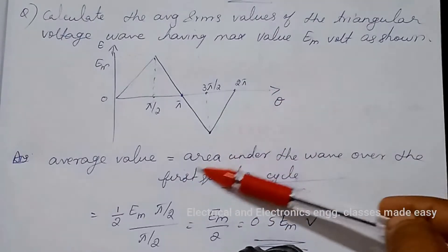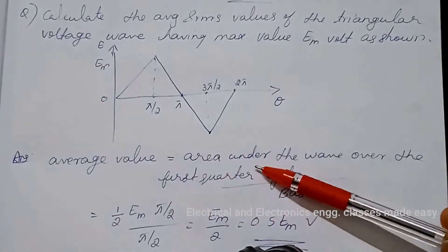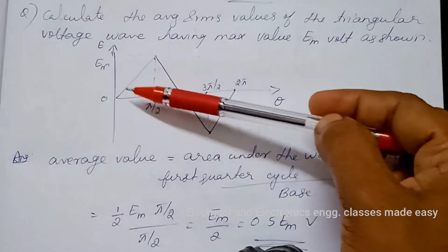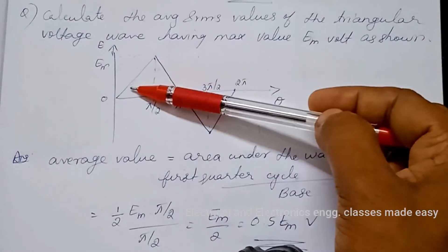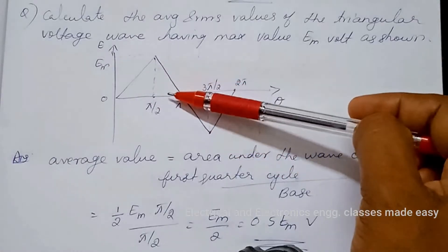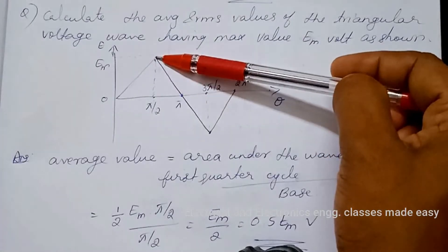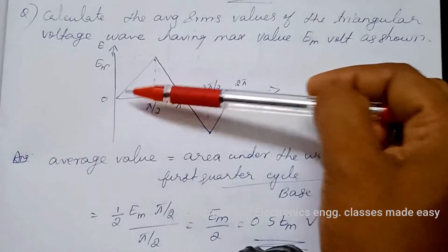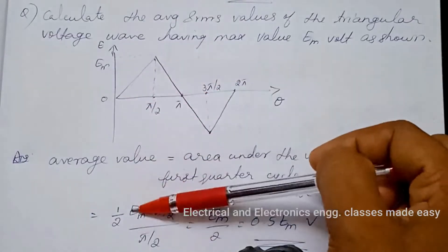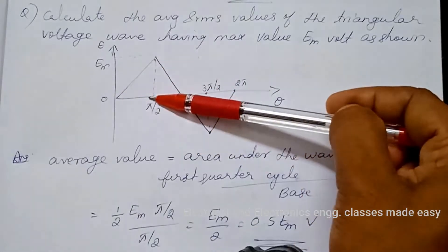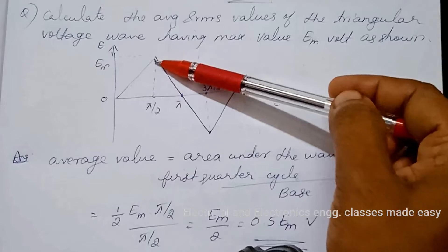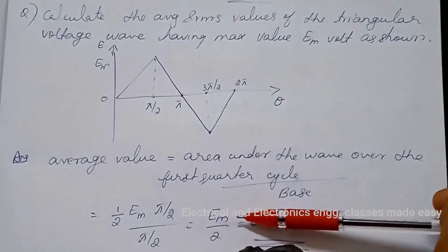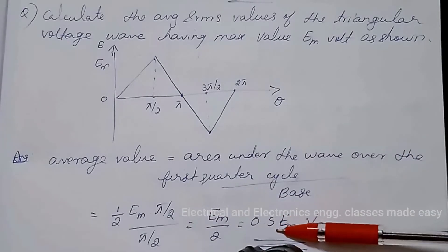To find the average value, we take the area under the wave over the first quarter cycle divided by base. Since this is a repetitive wave, we get 0 for the complete cycle, so we take the first quarter cycle only. The area of this portion is half into em into pi by 2, like a right-angled triangle, divided by the base pi by 2. That equals em by 2, equal to 0.5 em volt.